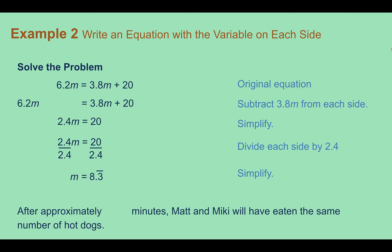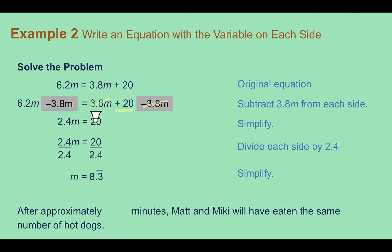Now let's solve. We subtract 3.8m from each side to get the m's on the same side — that eliminates it from the side with the number. If you're not sure which to add or subtract, find where your constant number is and get rid of it off that side. Simplifying, we're left with 2.4m equals 20. Dividing each side by 2.4, we get m equals 8.3 repeating. So after about eight and one-third minutes, Matt and Mickey will have eaten the same number of hot dogs.